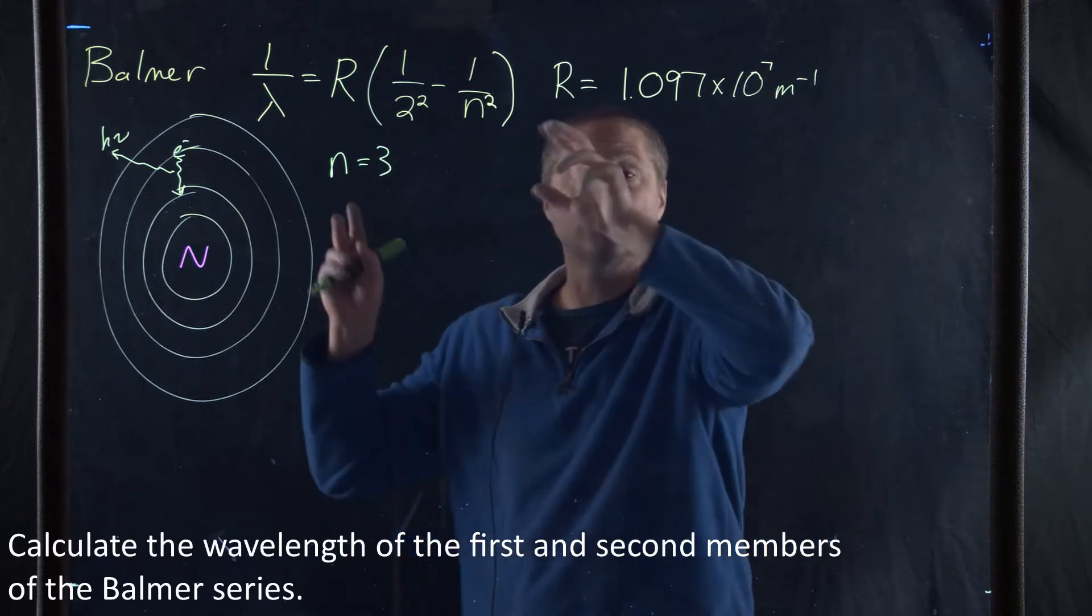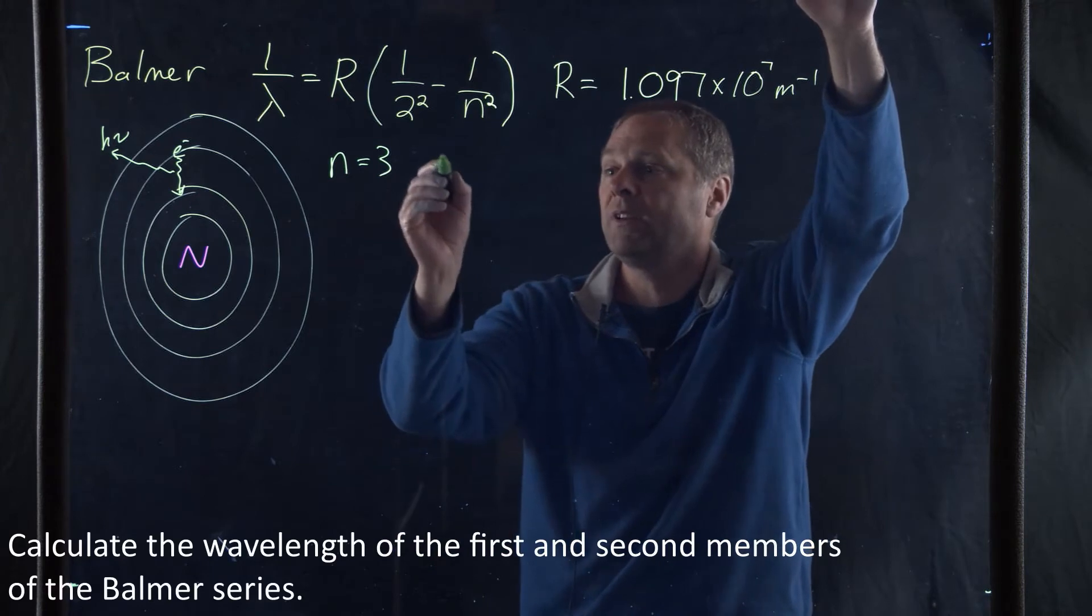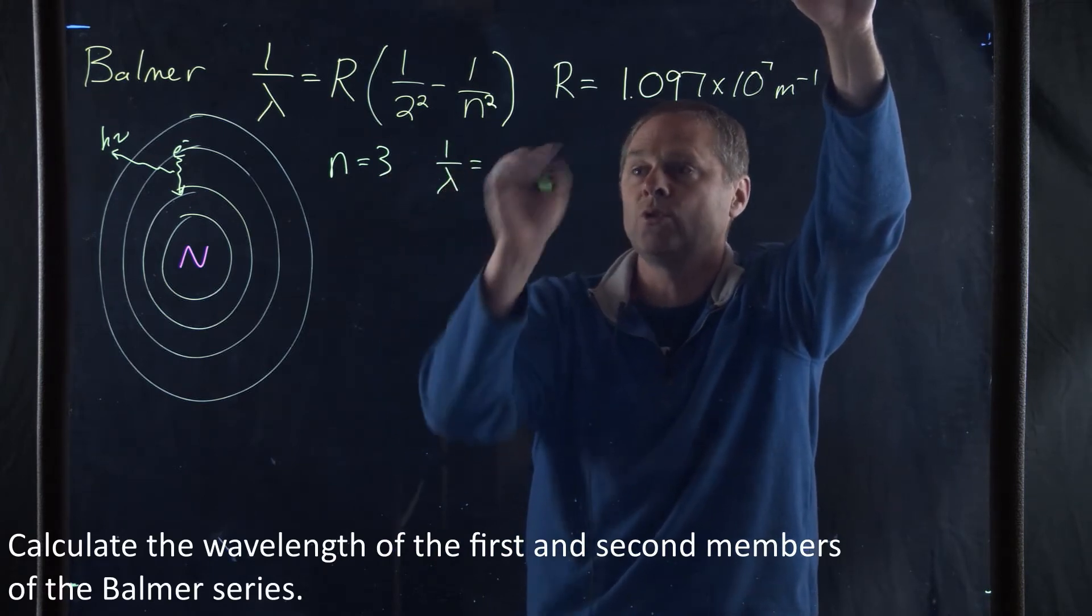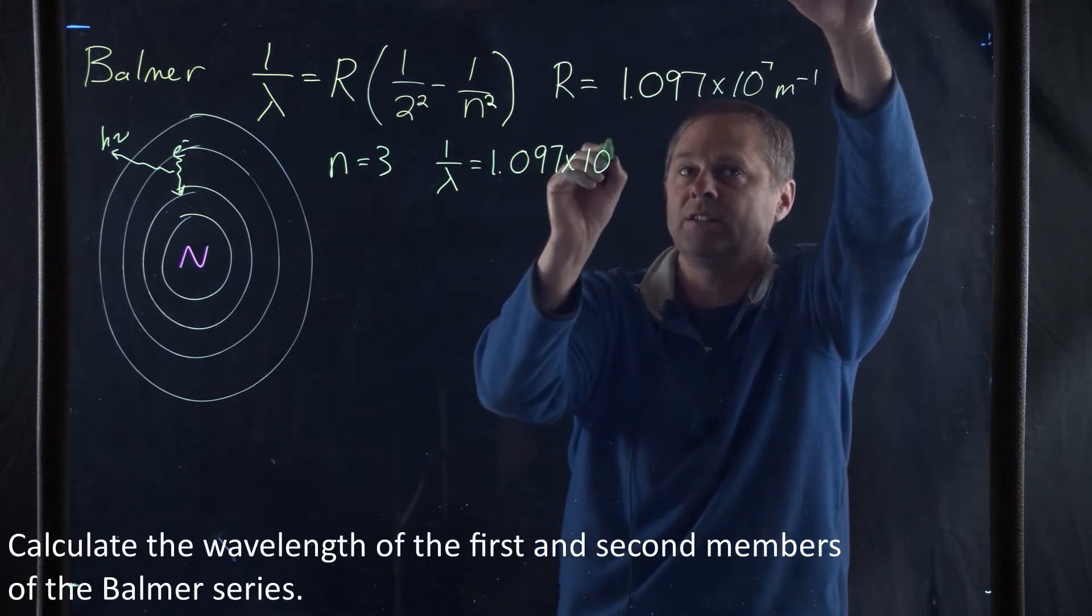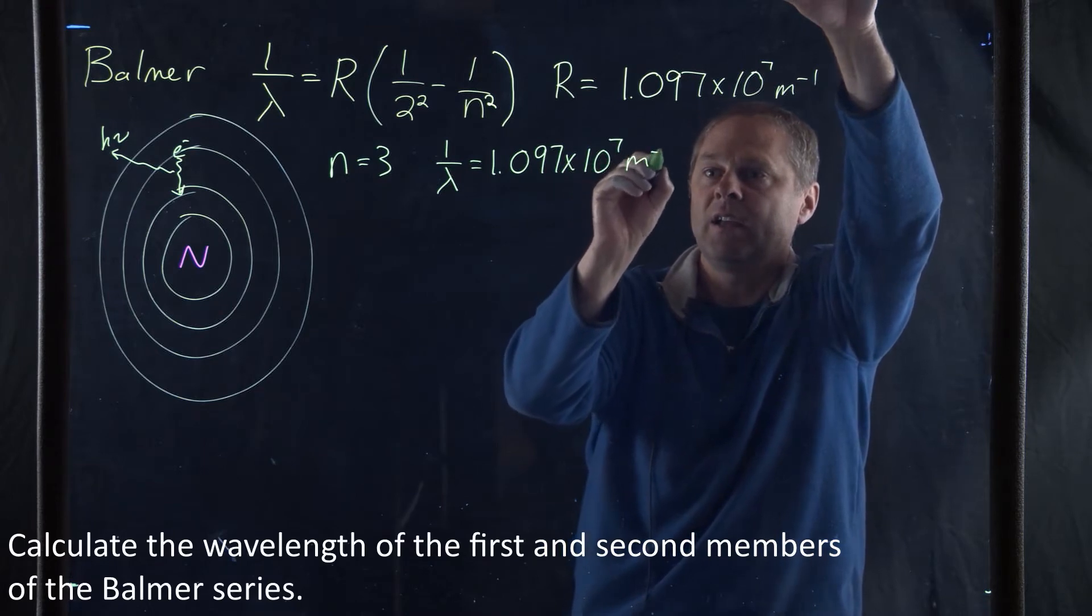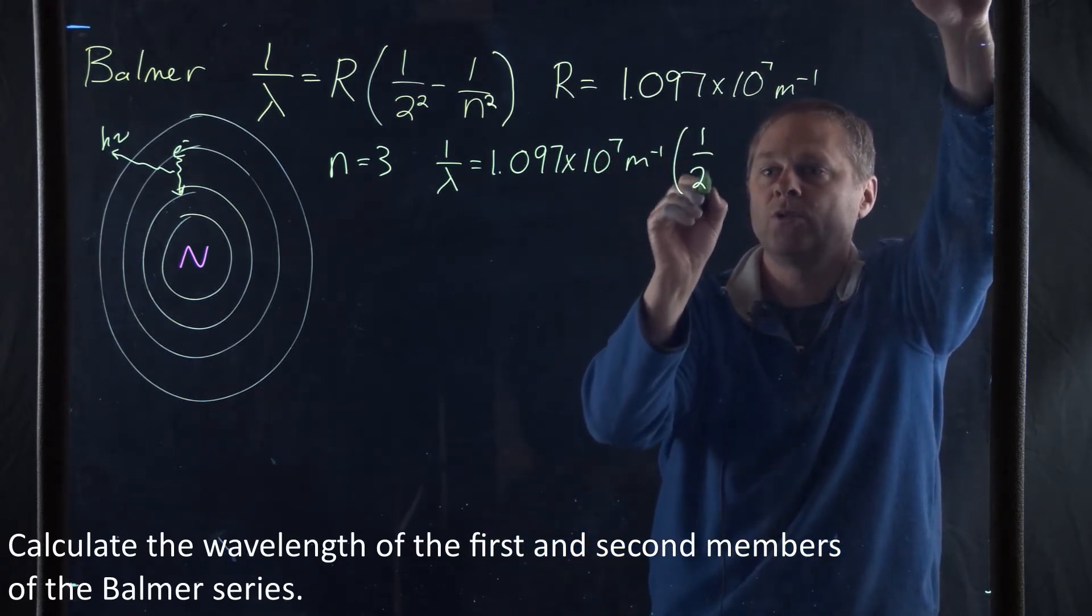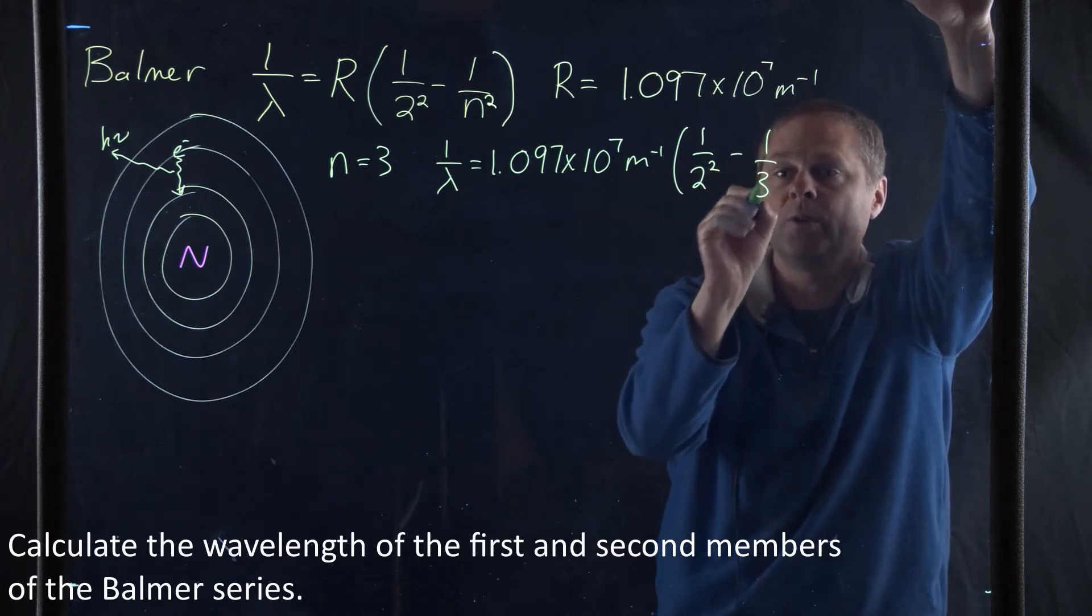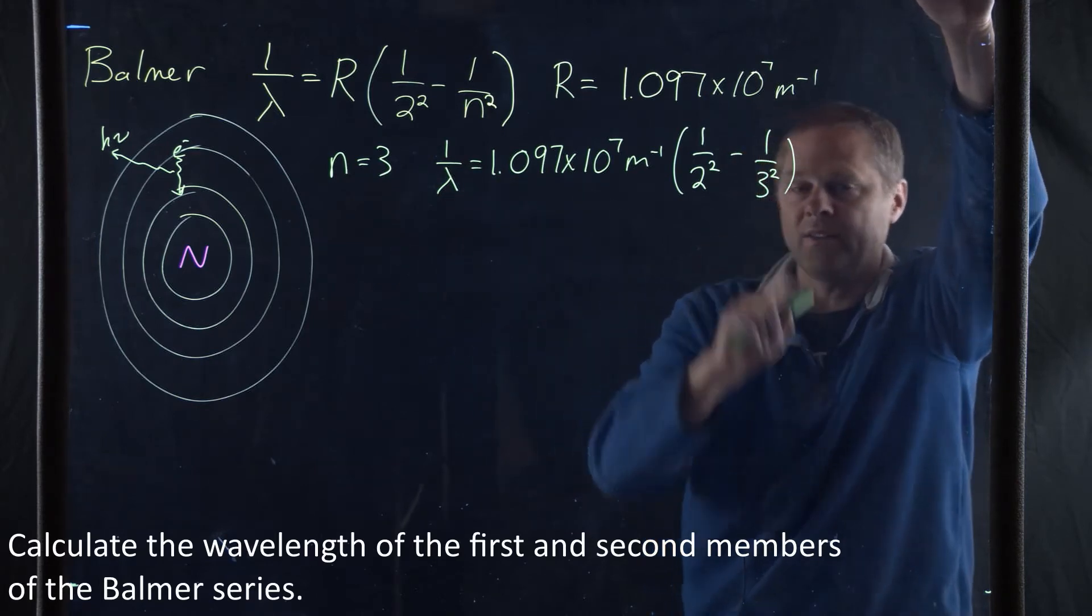This is to its ground state, and then this is from the excited state. So if we plug this in, we get 1 over lambda is equal to R, which is 1.097 times 10 to the 7th inverse meter, times 1 over 2 squared, which would be 1/4, minus 1 over 3 squared, the 3 from here, which would be 1/9.